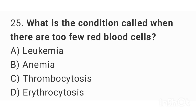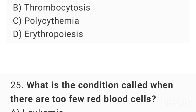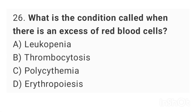Question number 25: What is the condition called when there are too few red blood cells? The right answer is option C: anemia. Question number 26: What is the condition called when there is an excess of red blood cells? The right answer is option C: polycythemia.